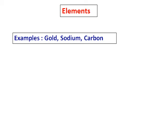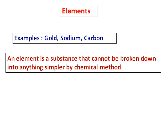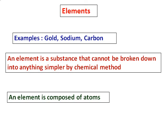So what is it by definition? An element is a substance that cannot be broken down into anything simpler by chemical method. And what are they composed of? An element is composed of atoms. We learn more about them as we go further.